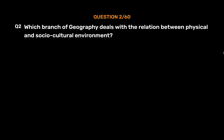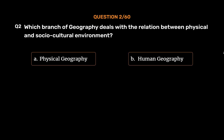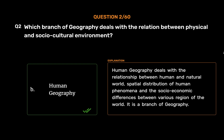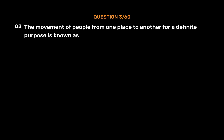Question number 2: Which branch of geography deals with the relation between physical and sociocultural environment? Option A: physical geography, option B: human geography, option C: environmental geography, option D: none of these. The correct answer is option B, human geography. Human geography deals with the relationship between humans and the natural world, spatial distribution of human phenomena, and the socioeconomic differences between various regions of the world.